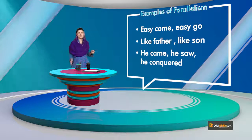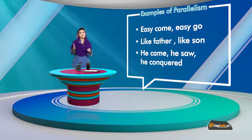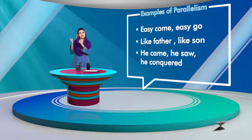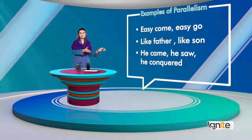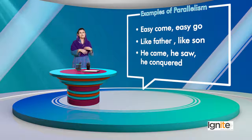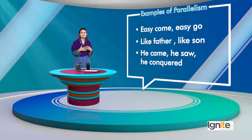He came. He saw. He conquered. There is one noun with each, and one verb in past tense with each. The same tense is used throughout, so it becomes parallel to each other.